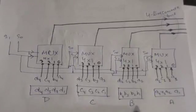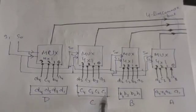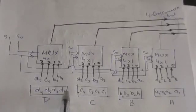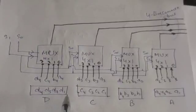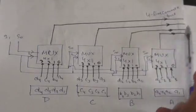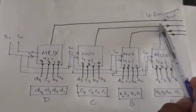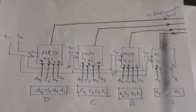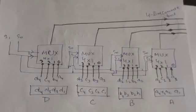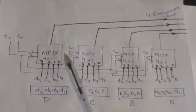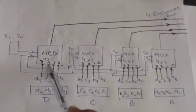The bits of register A are denoted A1, A2, A3, A4; bits of register B are B1, B2, B3, B4; bits of register C are C1, C2, C3, C4; and bits of register D are D1, D2, D3, D4. The common bus will have four lines — one for each bit position. The bus consists of four multiplexers, each of size 4×1.